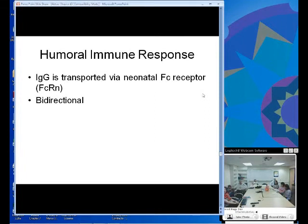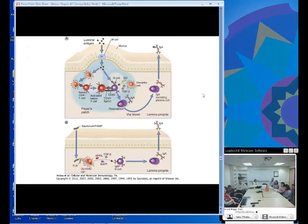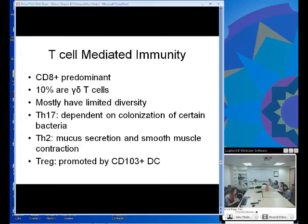IgG is transported via the neonatal Fc receptor, and this is bidirectional, not unidirectional. But this is a minor player compared to IgA. Here's a graphic of the entire system in which an antigen moves from an M cell into the underlying Peyer's patch, where it can be endocytosed by different antigen-presenting cells like dendritic cells, which present to a T cell and activate it. It can be endocytosed by a B cell and direct the T cell what to do. This helps the B cell class-switch to secreting IgA, becoming a plasma cell that sits in the lamina propria and secretes IgA.